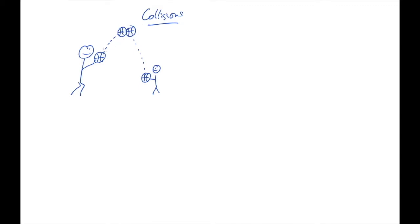So instead of going this way towards the basket, they're going to bounce off of each other — this one will go that way and this one will go that way. I want to think about this interaction between these two basketballs two ways: first, the forces that act on the individual basketballs.